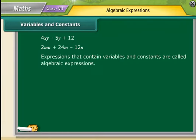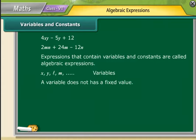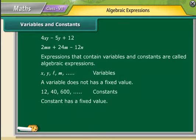Expressions that contain variables and constants are called algebraic expressions. The letters such as x, y, l, m, and so on are used to denote variables. So a variable can take various values and its value is not fixed. On the other hand, a value that does not change is a constant.